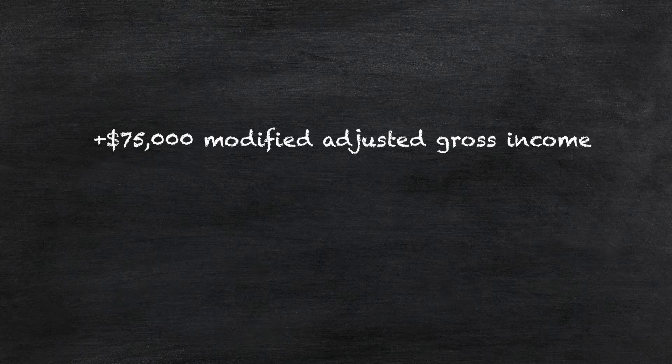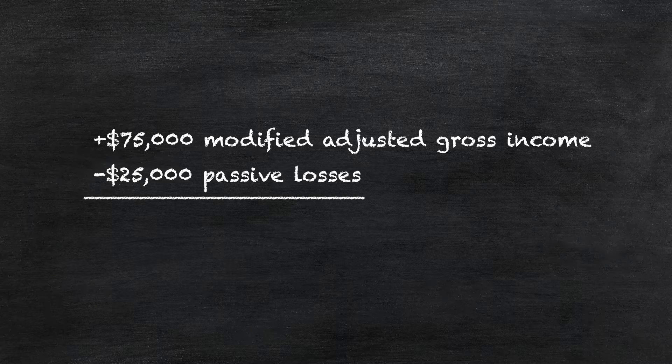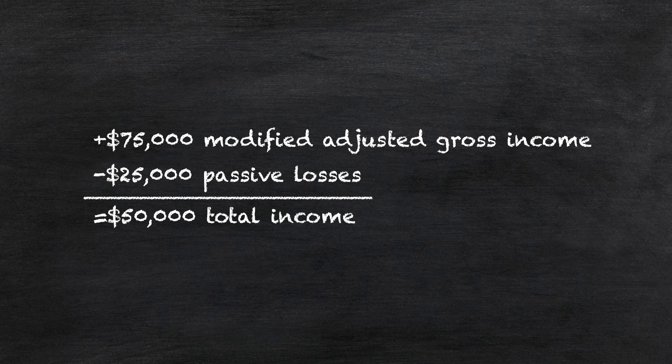For example, if you have $75,000 in modified adjusted gross income, you can use the $25,000 in passive losses to reduce your income to only $50,000. This means if you're in the 22% tax bracket, you can reduce your federal income taxes by up to $5,500 per year by using the special loss allowance.